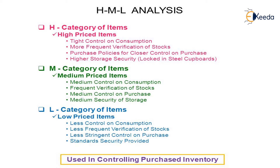Medium priced items, the M category, require medium control on consumption, frequent verification of stocks, medium control on purchase, and medium security of storage.